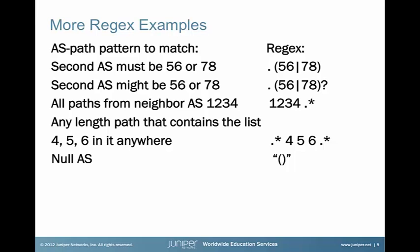To verify that your configured regular expressions are matching routes in the routing table, there's a command called 'show route as-path regular expression' that allows you to plug in your regular expression and it will list the routes that are considered a match. Sometimes you want to advertise routes originating from your own AS but not pass any transit routes from neighboring ASes. A simple way to do that is to create a regular expression called the null AS — just an empty set of parentheses in quotations. When we create these regular expressions, we make use of them by applying them with a routing policy.